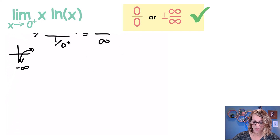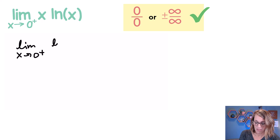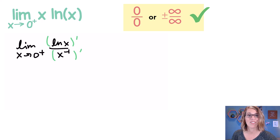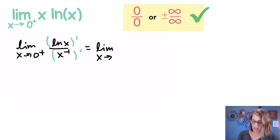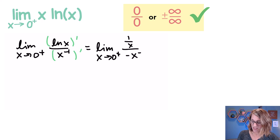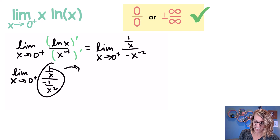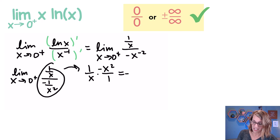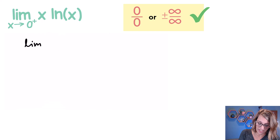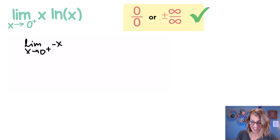Let's go ahead and take the derivative now. I'll take the limit in fraction form and write the denominator as x to the negative 1. Since I satisfied the condition for L'Hôpital's rule, I can take the derivative of the numerator and the derivative of the denominator. The derivative of the natural log is 1 over x, and applying the power rule to the denominator I get negative x to the negative 2. So I end up with the limit as x approaches 0 from the right of (1/x) divided by (1/x²), which is 1 over x times negative x squared, giving me negative x.